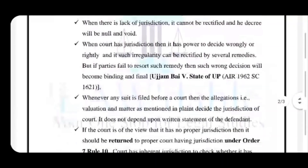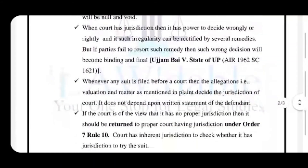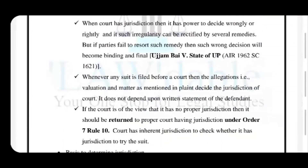Whenever any suit is filed before a court, the allegations as mentioned in the plaint decide the jurisdiction of the court. Jurisdiction of the court is decided as per the points given in the plaint and not as per the points given in the written statement presented by the defendant. If the court is of the view that it does not have proper jurisdiction, then the plaint should be returned to the proper court having jurisdiction under the provisions of Order 7 Rule 10. If parties do not follow these provisions, then such a decision becomes binding on the parties.